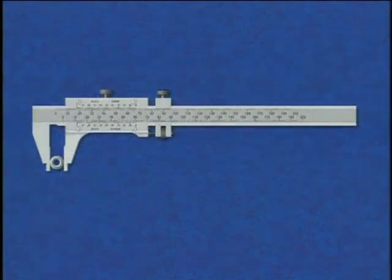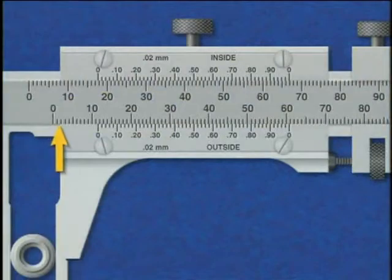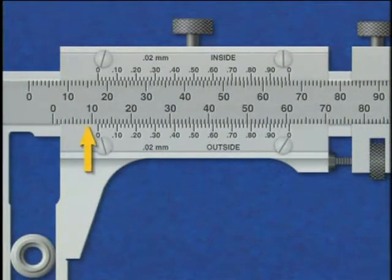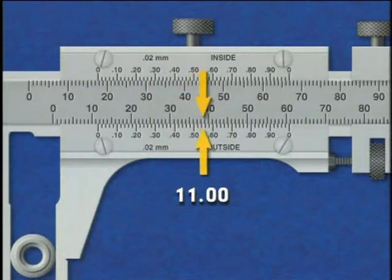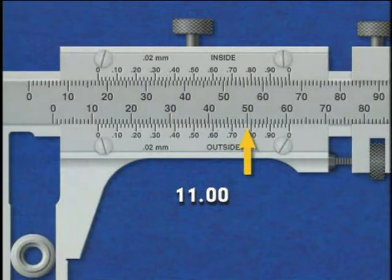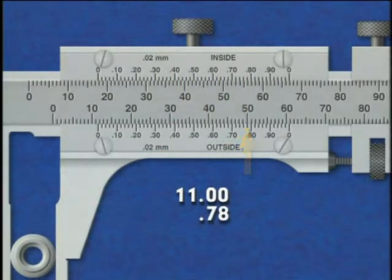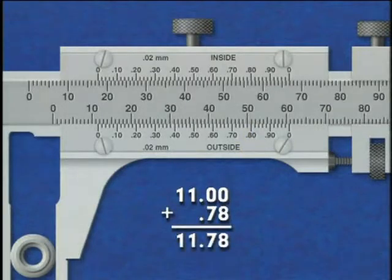To read the Vernier caliper, first indicate the number of millimeters that are between the zero on the stationary bar and the zero on the Vernier plate. Then, locate where the graduation on the Vernier plate exactly coincides with the graduation on the stationary bar. Reading off of the Vernier plate, note that number's value in hundredths of a millimeter. Add the Vernier plate reading to the number of millimeters counted on the stationary bar for the final measurement.